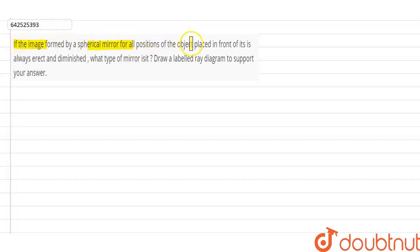If the image formed by a spherical mirror for all positions of the object placed in front of it is always erect and diminished, what type of mirror is it? Draw a labeled ray diagram to support your answer.